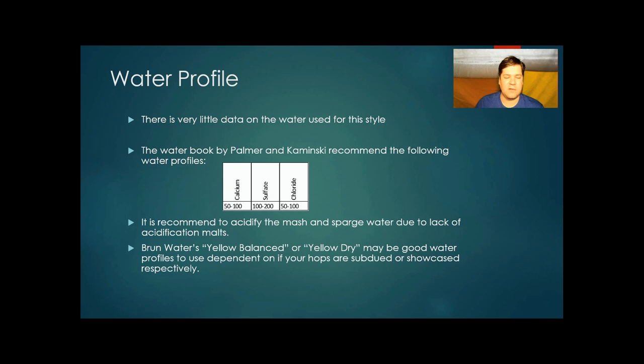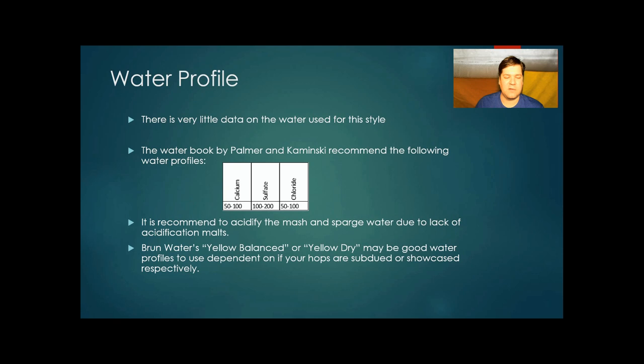Water profile. There's very little data on the water used for this style. Palmer's and Kaminsky's water book recommend 50 to 100 parts per million calcium, 100 to 200 parts per million sulfate, and 50 to 100 chloride. It's recommended that you acidify the mash and sparge water because there's no malts in there that are going to help you. I think yellow balanced or yellow dry may be good brewing water profiles to use for this style.